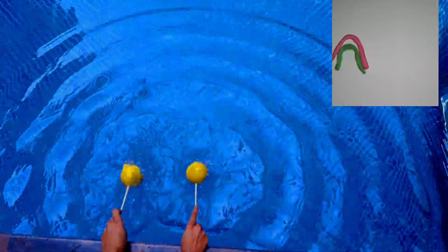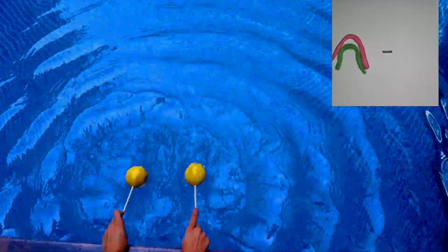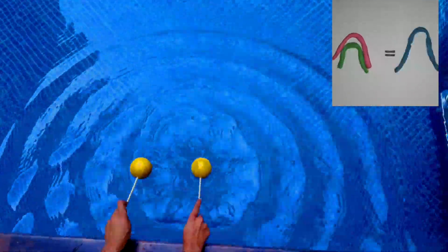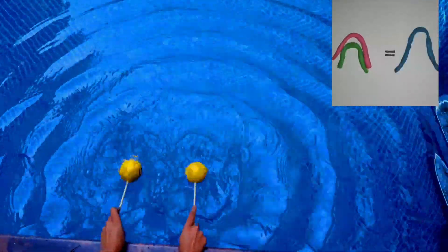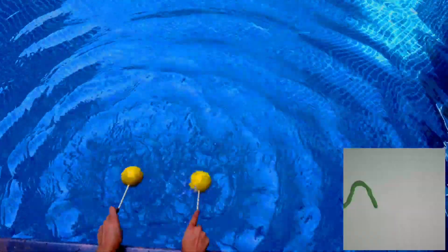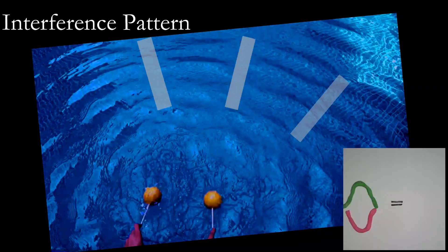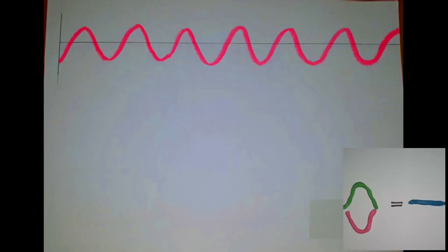Let's see what happens when two waves interfere. The places where two crests meet form a bigger crest, and the places where a crest and a trough meet, they cancel each other out, leaving regions of nothing at all.